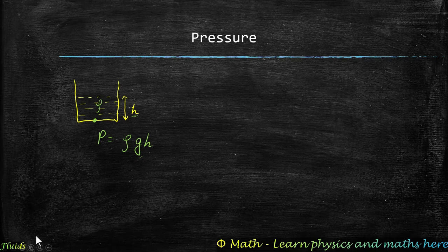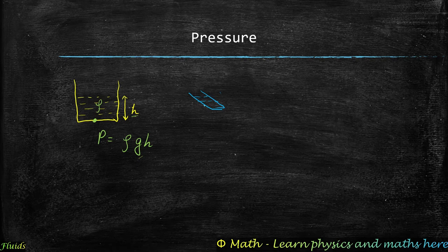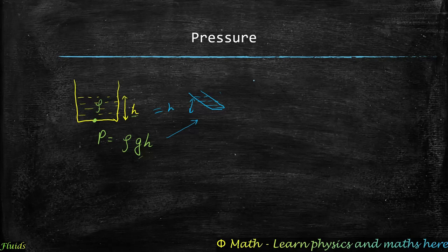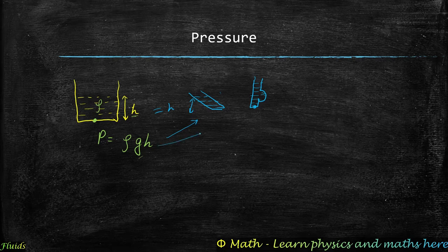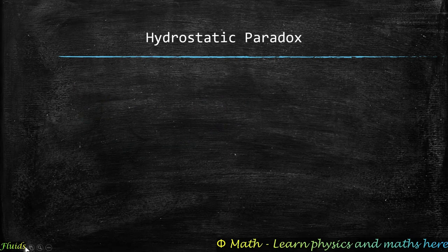An amazing property of Pascal's law is that even if we take an irregularly shaped or slanted vessel, if the fluid is filled up to the same height H, the pressure at the bottom would still be ρgH. This works for any shape — no matter how wide or strange the container is — as long as the height is the same.